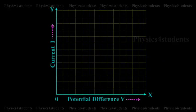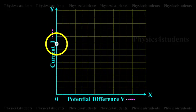Since potential difference V is proportional to the current I, the graph between V and I is a straight line for a conductor.